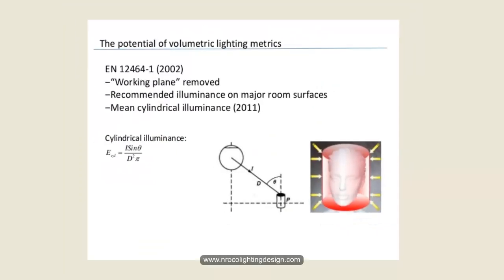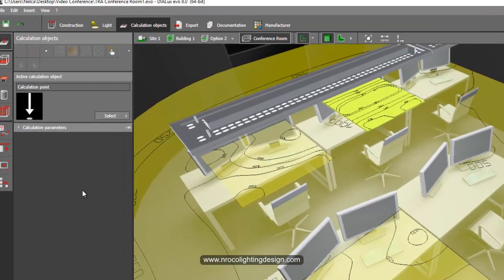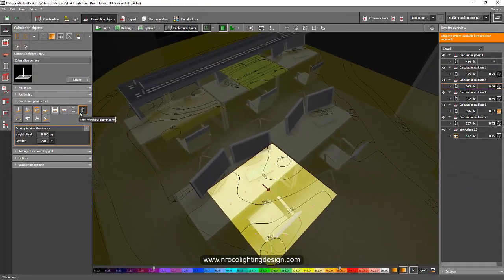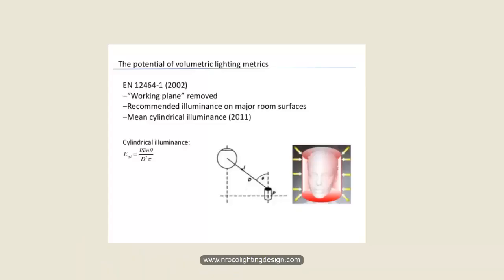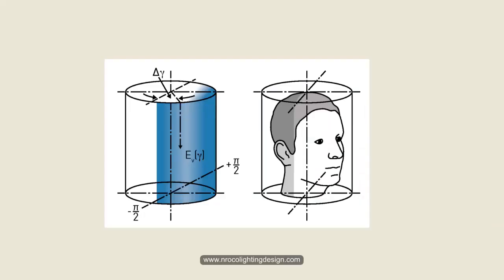In a video conference project, good lighting is very important. We really need to consider what is called cylindrical illuminance, instead of vertical or horizontal illuminance. In Dialux Evo, we have two options: cylindrical or semi-cylindrical illuminance. We use semi-cylindrical because face modeling is only the half side of the cylinder — when a person is looking at the camera, only half of the cylinder needs to be considered in our calculation.